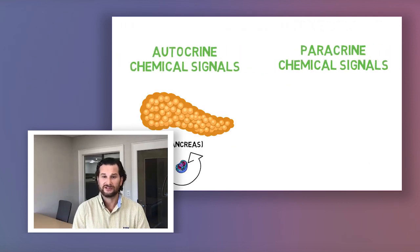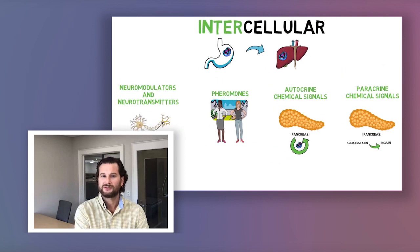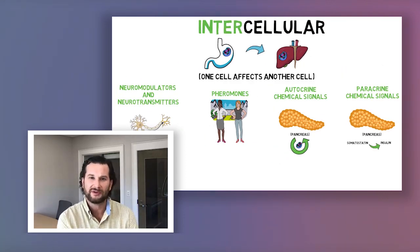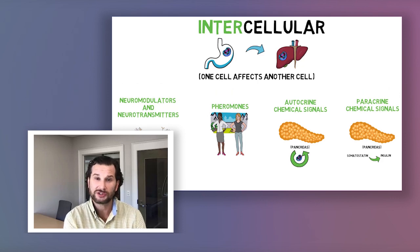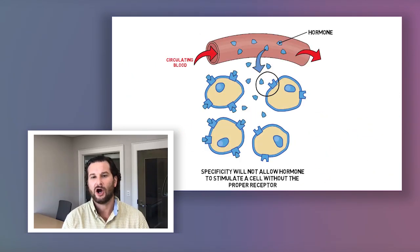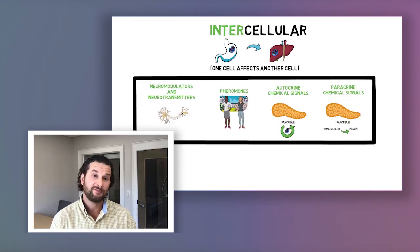The endocrine system: know its functions — things like water balance, ion regulation, growth, metabolism, and blood glucose control. Know chemical signals: autocrine, paracrine, neuromodulators, neurotransmitters, and pheromones. Know the receptors in the endocrine system. You will see questions about hormones and how the system works with them, so be familiar with endocrine glands and their secretions.